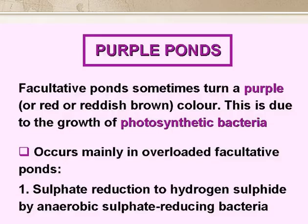The reason why facultative ponds turn purple is that the algae are no longer the predominant microbial group. They have been outgrown by photosynthetic bacteria. This occurs mainly in slightly overloaded facultative ponds, and it's due to these two factors.